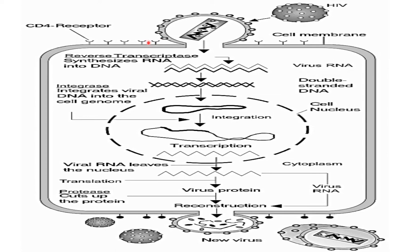The retrovirus first binds to the host receptor, which is the CD4 receptor. After binding to the receptor, the RNA of the virus is released inside the host cell. This RNA, with the help of reverse transcriptase enzyme, synthesizes DNA, which is then multiplied to form double-stranded DNA. This DNA then enters inside the nucleus.